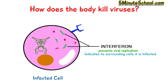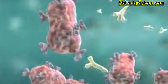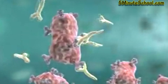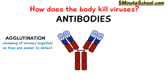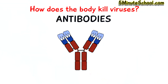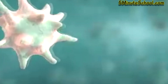The last method the body uses to eliminate viruses is via antibodies. Antibodies stick onto viruses, making them unable to infect other cells. Several antibodies can work together and cause viruses to all stick together in a process called agglutination, which allows for better recognition of the virus by immune cells. Additionally, once antibodies have stuck onto a virus, they can bind onto FC receptors on phagocytes — immune cells which engulf and destroy the virus, but need to be activated by antibodies via the FC receptor first.